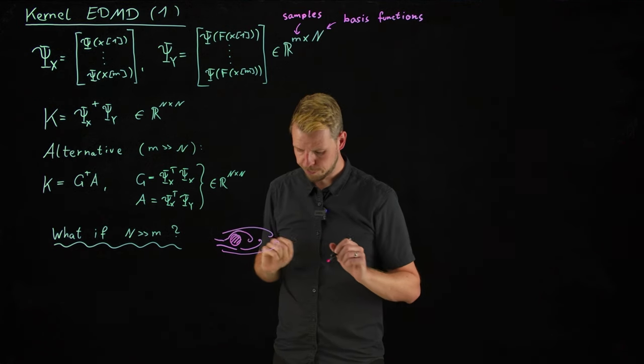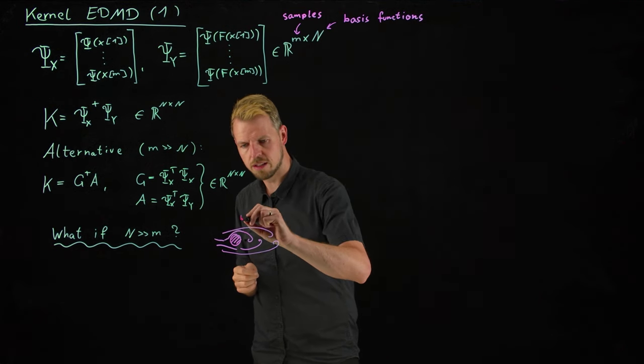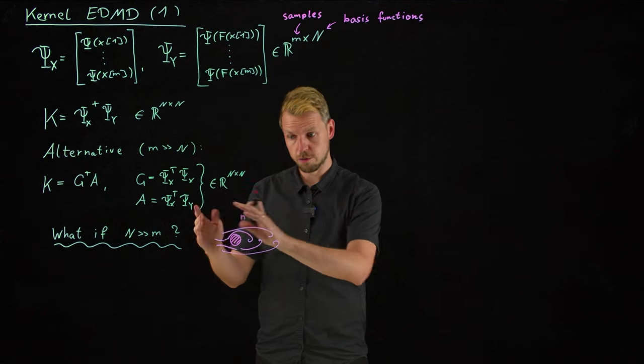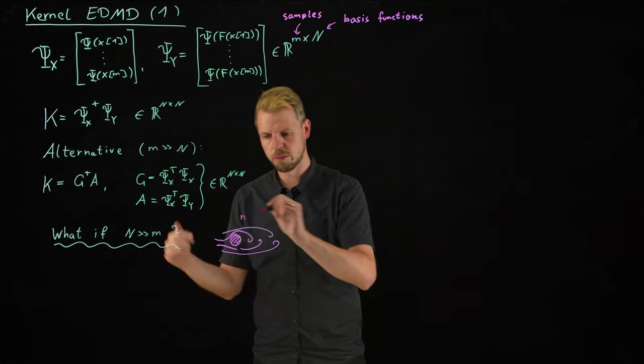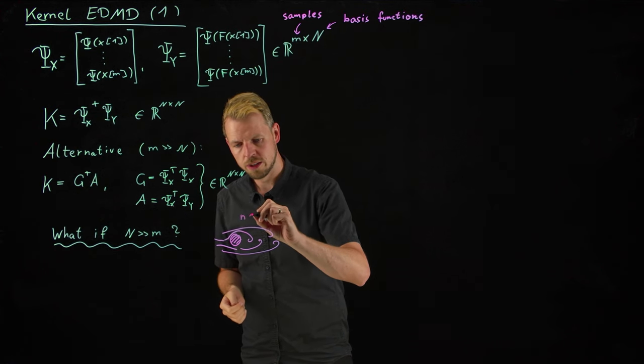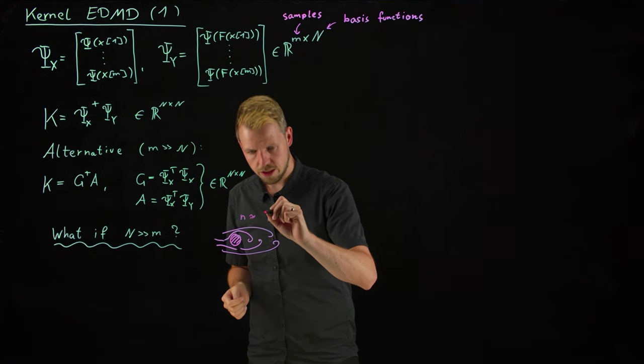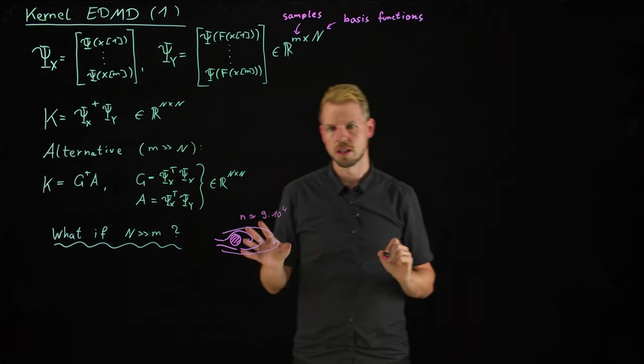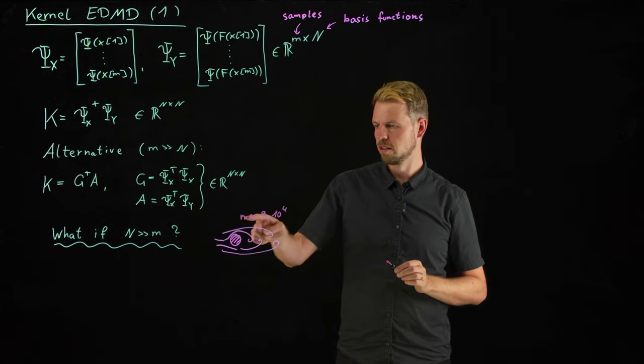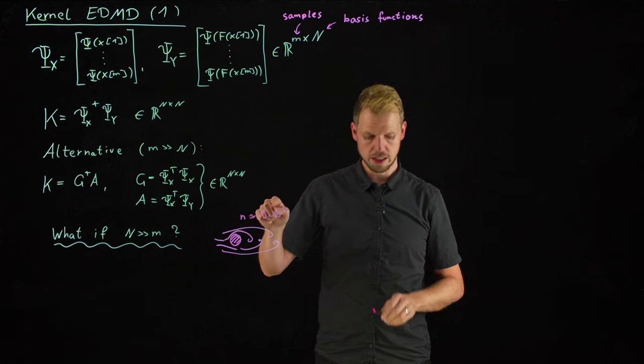And the example that we will have is, in fact, that this n, so the number of measurements we have, because what you do is you introduce a fine grid in x1 and x2 directions, or spatial directions 1 and 2, that this n is roughly 90,000. And so here we have a problem that this lowercase n is already very high-dimensional.